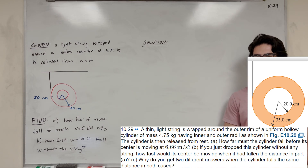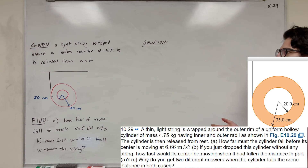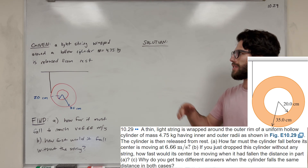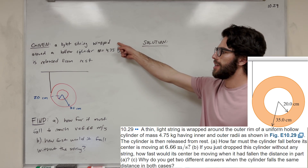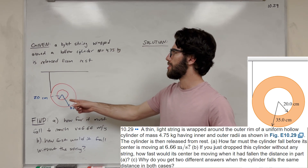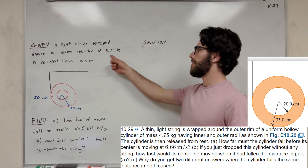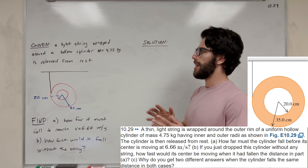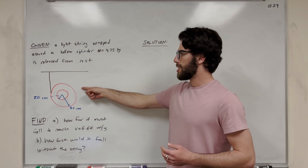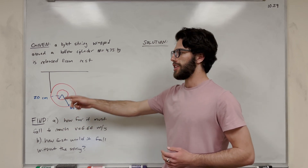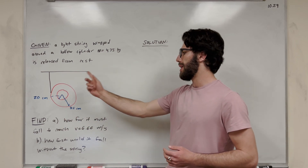What's up, Cal-K, and welcome back to physics. So what do we have here? We've got a rotational problem. We have a light string that's wrapped around the outside of a hollow cylinder. The mass of the cylinder is 4.75 kilograms, and it's released from rest. So it's going to fall, unwind the string, and start spinning.